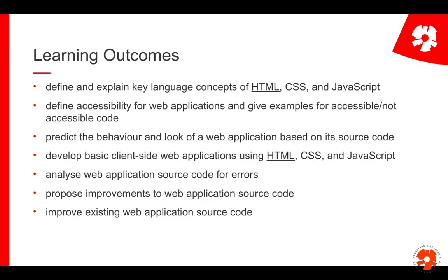The learning outcomes are that you are able to explain key language concepts of HTML. You should be able to define what accessibility means and give examples for that. Based on your HTML knowledge you should be able to predict how a website looks like — so far of course only restricted to the structure — and develop basic applications.